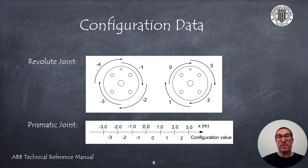As I have mentioned before, the values of CFG1, CFG4, and CFG6 of the data type CONF data represent the quadrants of the joints. Here we see a figure taken from ABB's reference manual showing what these quadrants mean. However, it is true that this is true for revolute joints.